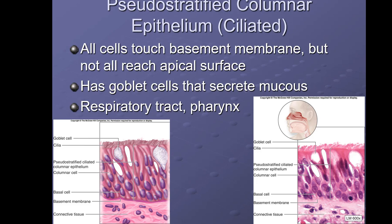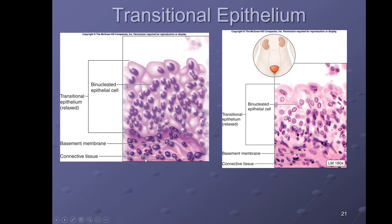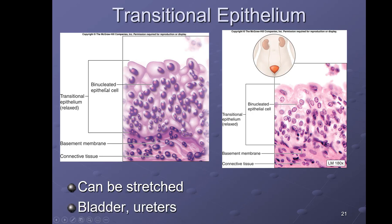Moving further down, much of the lining of your airways is lined with this tissue that has cilia. Any dust particles or foreign matter that get into the respiratory tract can be moved out by the cilia, aided by the goblet cells creating mucus to help trap them.